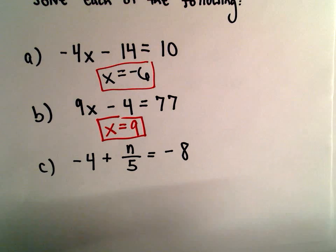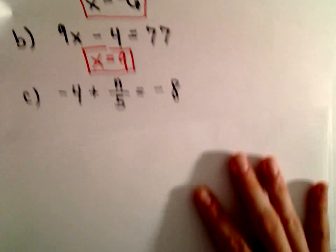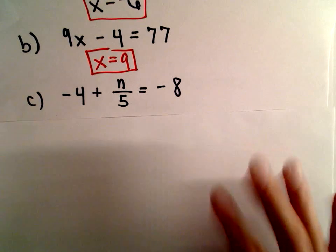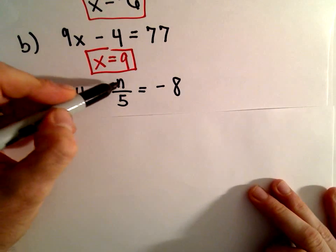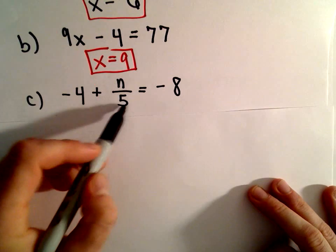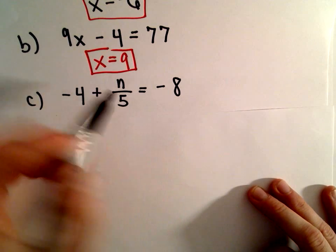Part C here, same idea. We've got a fraction, no big deal. So I've got an n over 5. We've got negative 4 plus n over 5 equals negative 8.